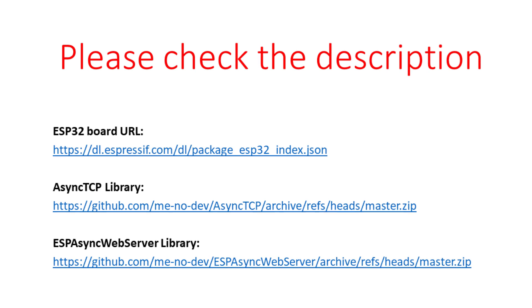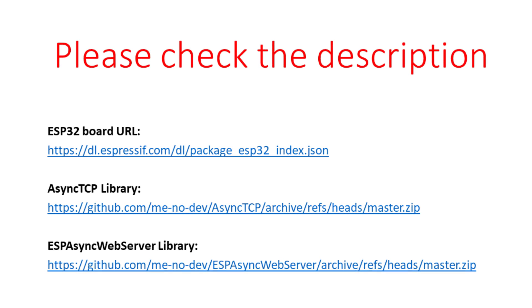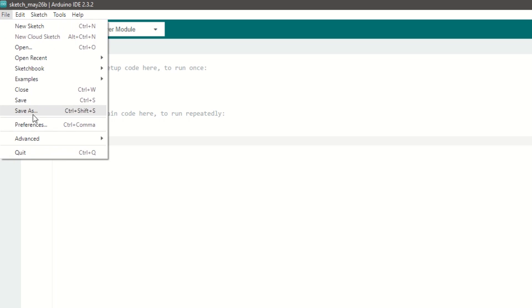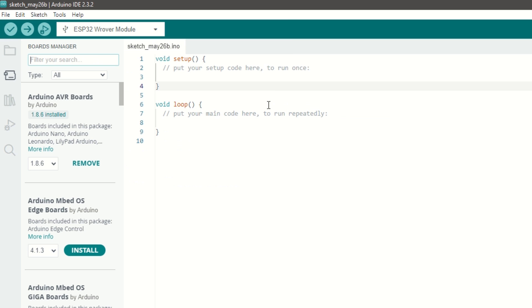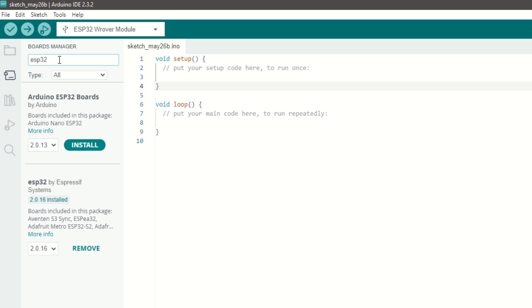Let's take a quick look at the code. First we need to install the ESP32 board using Arduino board manager. I have provided the ESP32 board link in the description below. Go to File, Preferences and add the ESP32 board link. Then go to Tools, then Boards Manager and search for ESP32 and install it.